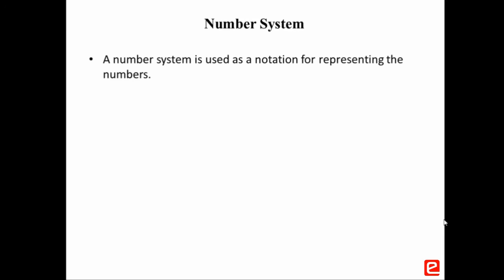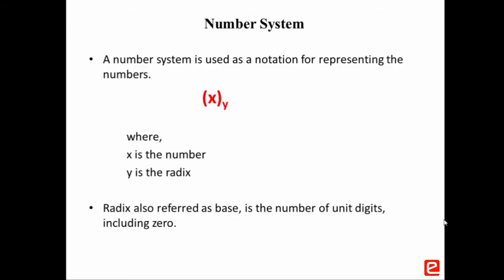A number system is used as a notation for representing numbers using digits or symbols. Notation is given as x to the base y, where x is the number and y is the radix. Radix is also referred to as base, which is the number of unit digits including 0 used to represent the numbers.